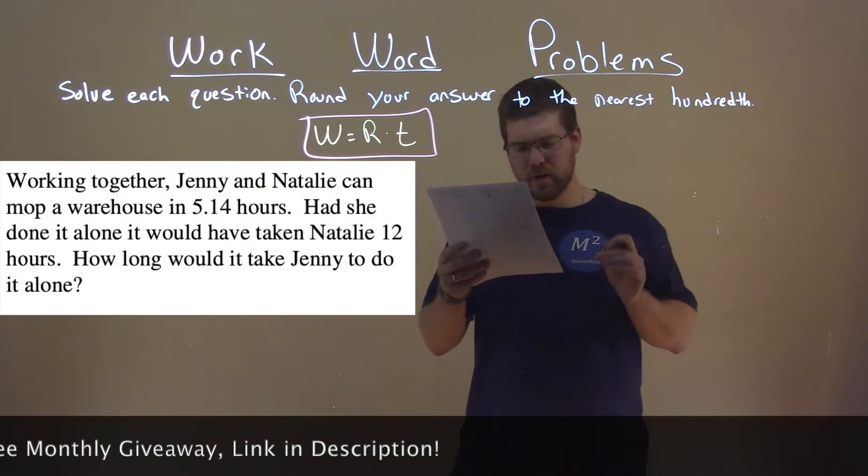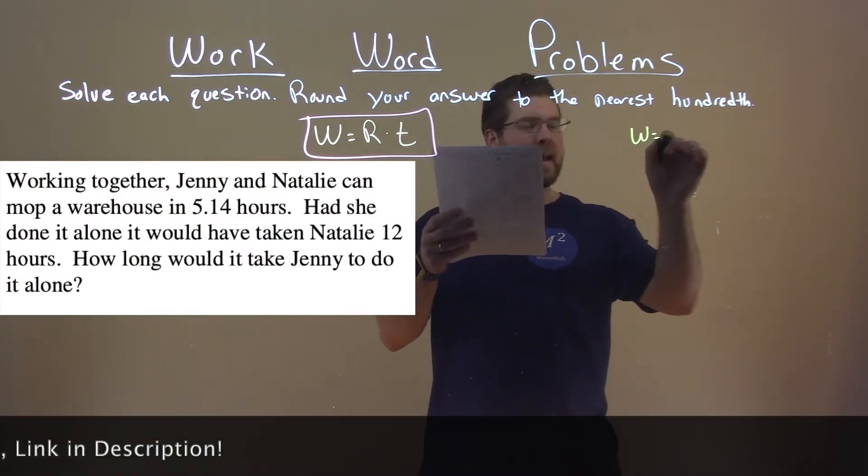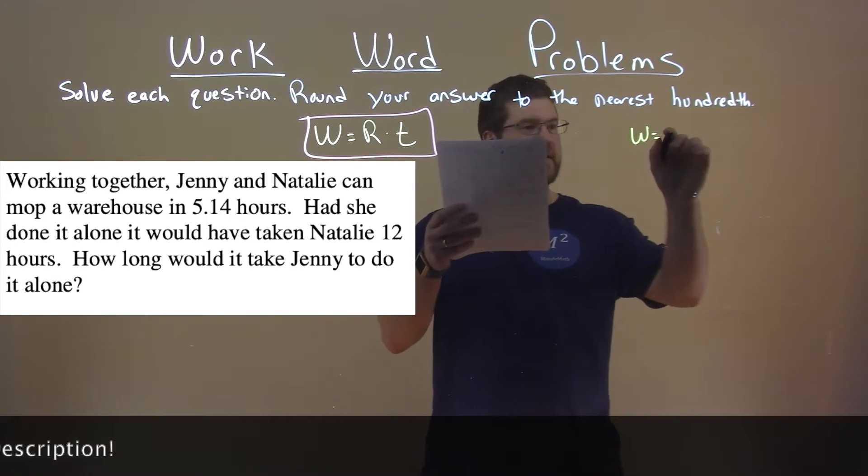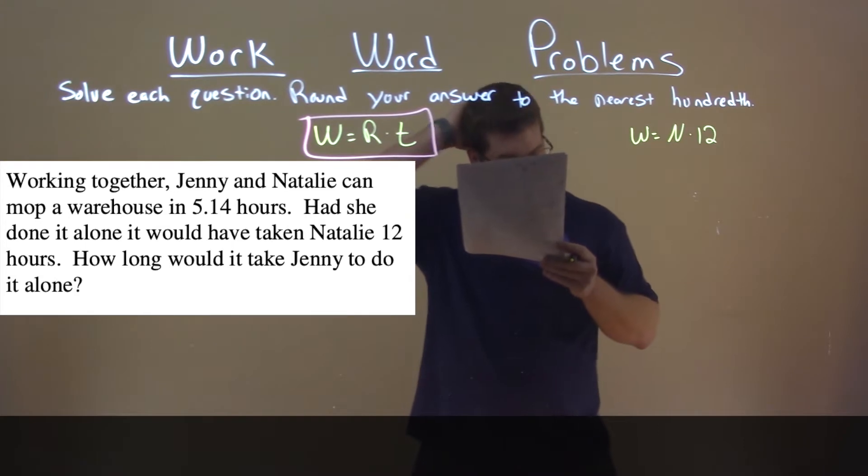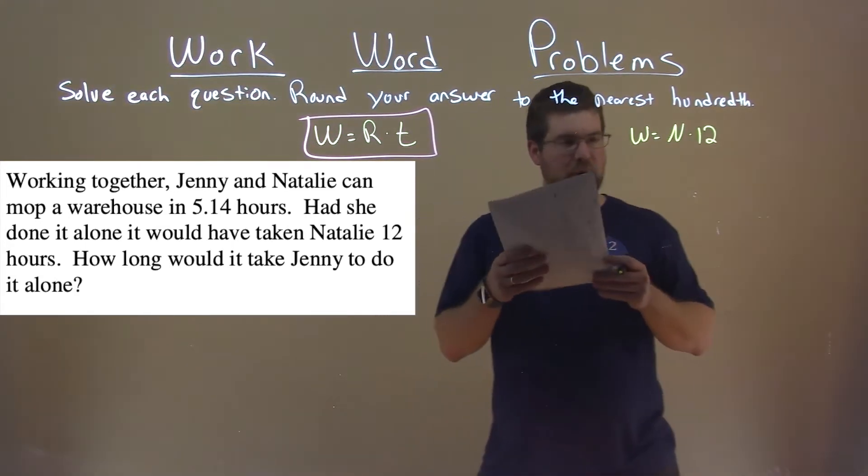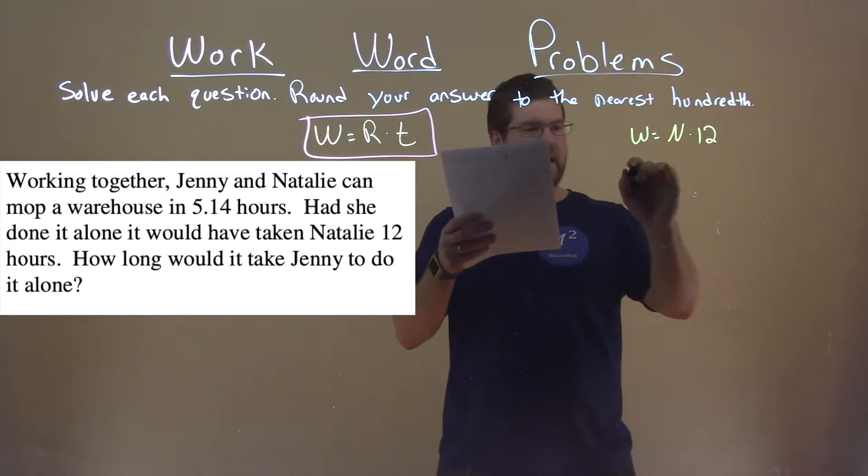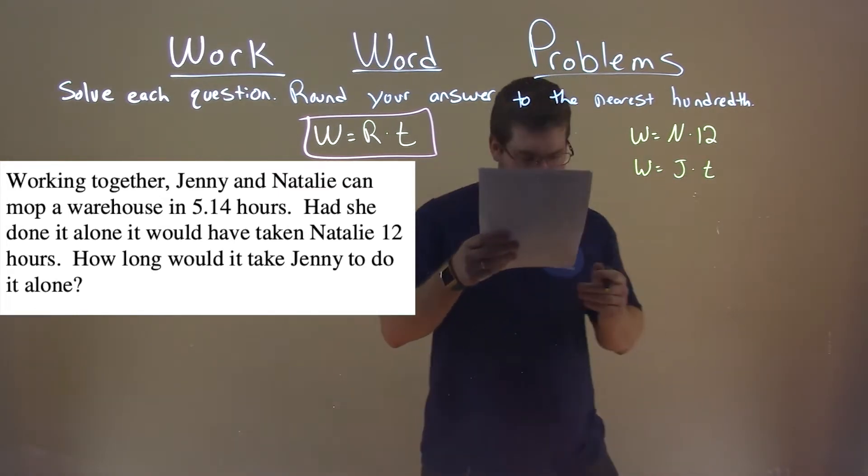A few things we want to note here. The work of Natalie, so work is Natalie's work rate times 12 hours. We don't know what Jenny's work rate, but we can label that as Jenny times T here.